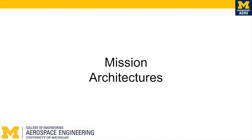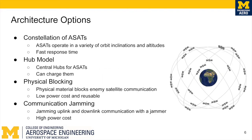Mission architectures. We must balance and select the best mission architecture. There are two main decisions to make: a constellation of ASATs versus the hub model of ASATs, and physical communication blocking versus communication jamming. They each provide advantages and disadvantages for the mission. We will compare them to our three mission criteria: feasibility, complexity, and cost.